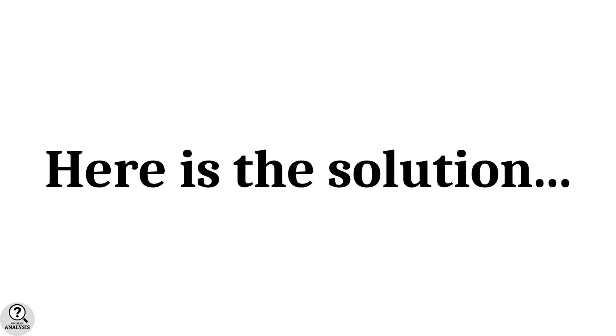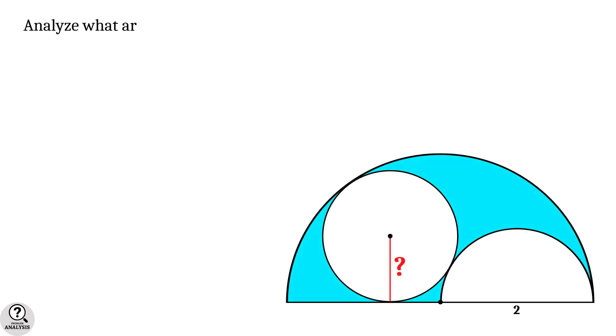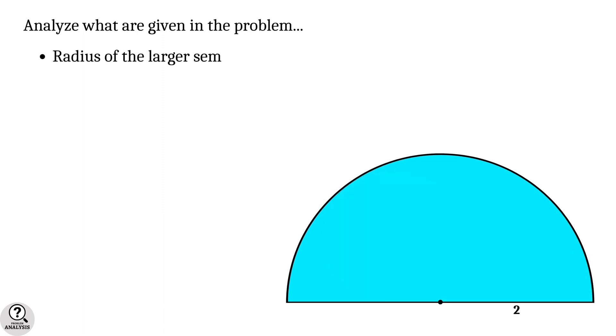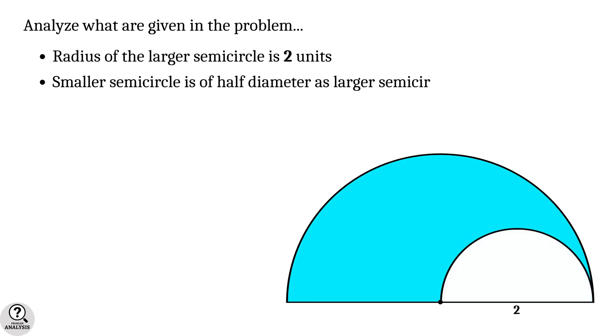And the solution is right here. First, let's analyze what are given in the problem. First of all, radius of the larger semicircle is 2 units. Secondly, the smaller semicircle is of half diameter as larger semicircle. And its diameter coincide with the radius of the larger semicircle.